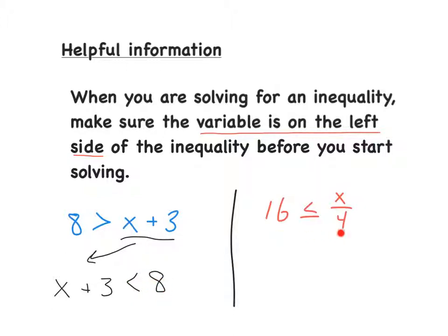So in this one, we would rewrite it as x divided by 4 should be over to the left. Since the first one says 16 is less than or equal to x divided by 4, you need to flip the signs to make it look like x divided by 4 is greater than or equal to 16. Again, we're doing this just because it will help you when you have to graph these inequalities.